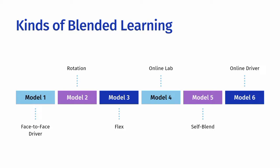Model 5 is Self-Blend. The self-blend model allows students to choose courses in addition to their typical brick-and-mortar classroom classes. This model is always remote, a major difference from the online lab. Model 6 is Online Driver. This model utilizes a platform and a teacher that delivers the curricula. Students remotely work on their program most of the time. If there is a face-to-face component, it is mode-optional or may be extracurricular activities augmenting the curriculum.